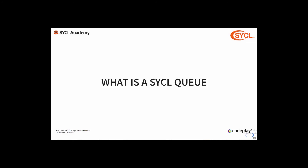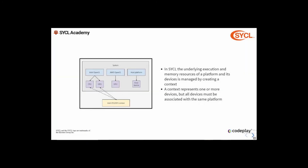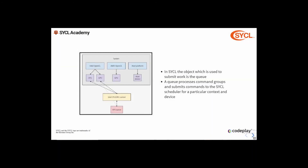Now we're going to look at what a queue is and what it does, but first it's important to understand what a context is. A context in SYCL is an object which manages the underlying resources of a platform and a number of devices. A context can represent one or more devices, but they must all be associated with the same platform. A queue in SYCL is the object used to submit work, and a queue's job is to process command groups and submit commands to the scheduler for a particular context and device.